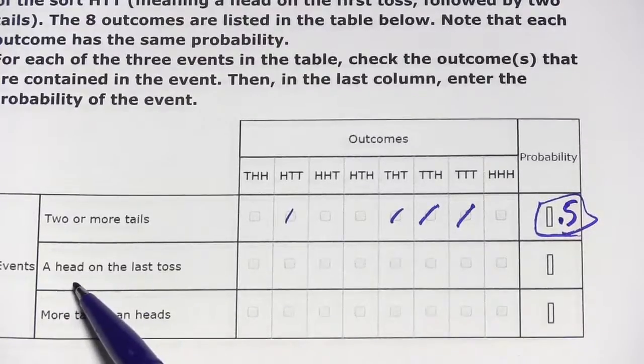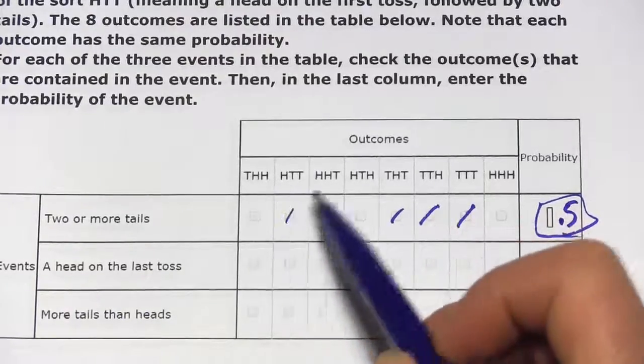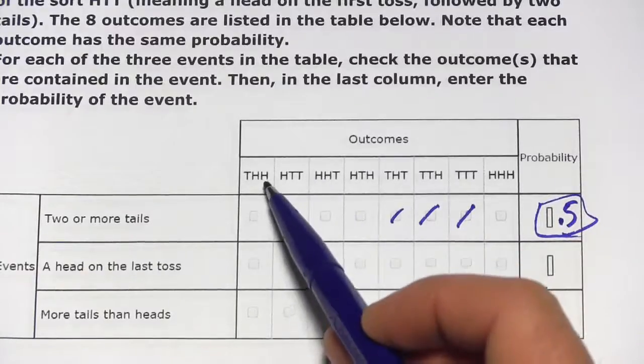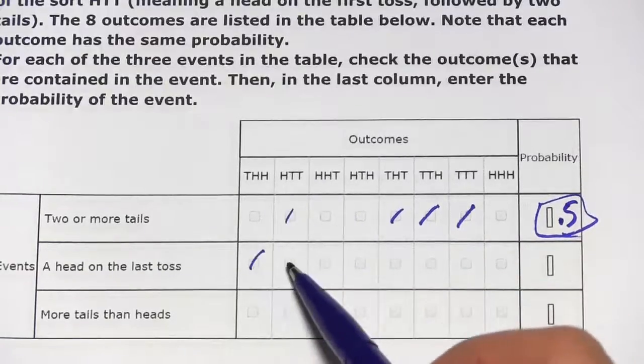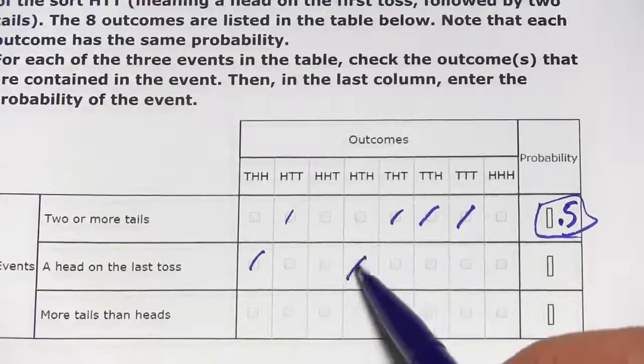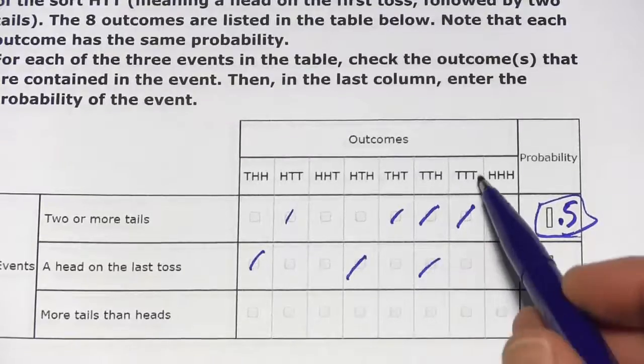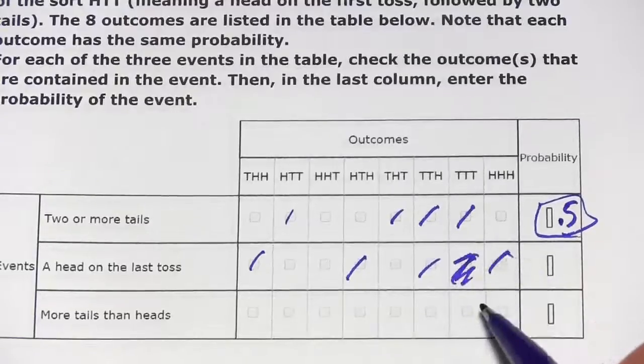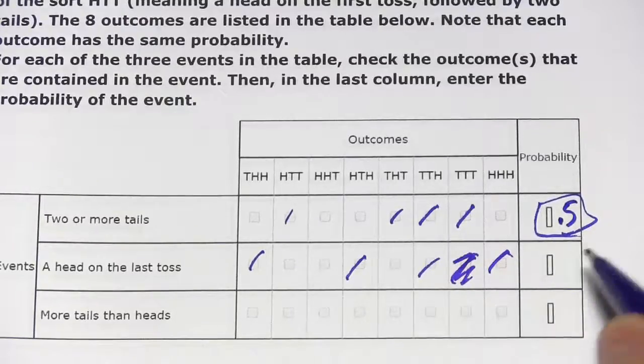Let's look for a head on the last toss. [Checking each: yes, no, no, yes, no, yes, no, and yes.] So again, that's four out of eight. That's a probability of 0.5.